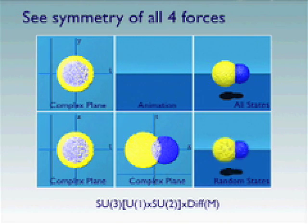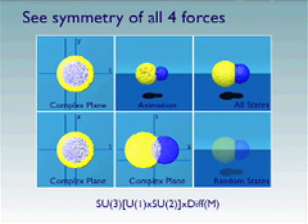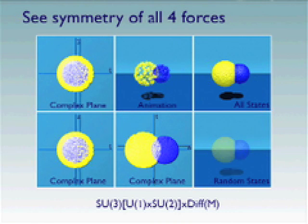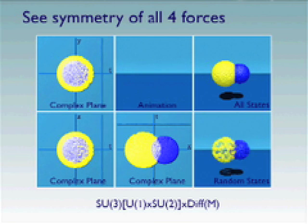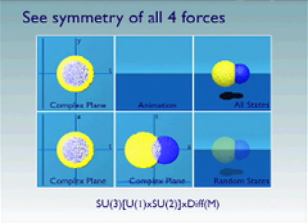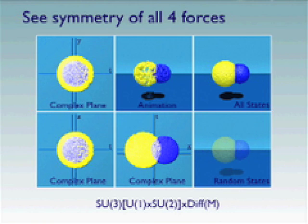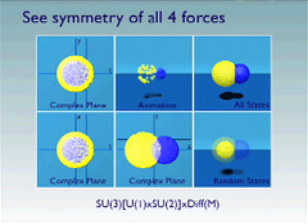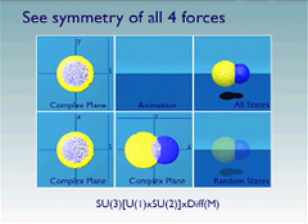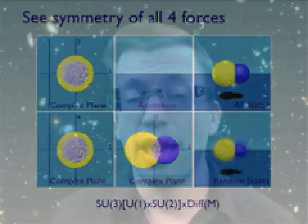And that group is associated with the force of gravity. So, in this one image, we have symmetries U1, SU2, SU3, and DIF-M. Each of which is associated with one of the four fundamental forces of nature. And that would be electromagnetism, the weak force, the strong force, and gravity. So, this might be a very important bit of animation. Thank you very much.